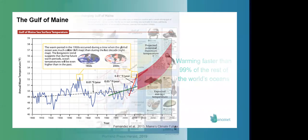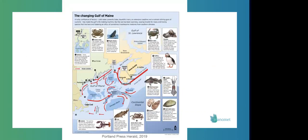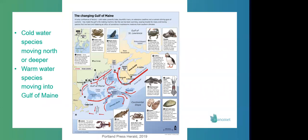This warming is really wreaking havoc on the Gulf of Maine ecosystem. And so this is actually a figure from a 2019 story by a journalist named Colin Woodard, and it basically is breaking down all of the various ecosystem impacts that we're experiencing in the Gulf of Maine. And I won't go through the entire figure, but just in a nutshell, we're seeing cold water species moving north out of the Gulf of Maine or deeper to avoid warm water. So species like Atlantic cod and the American lobster, and we're seeing new warm water species moving in.